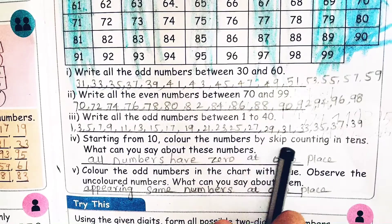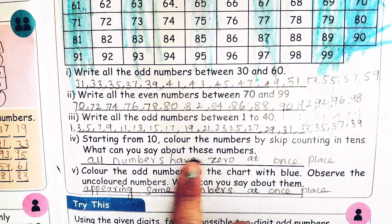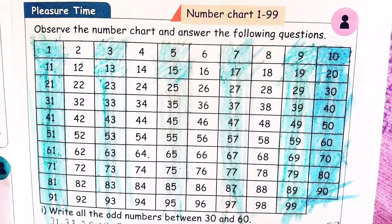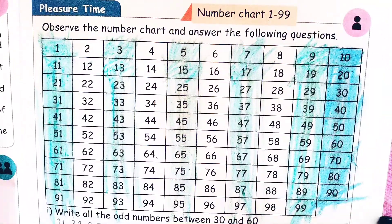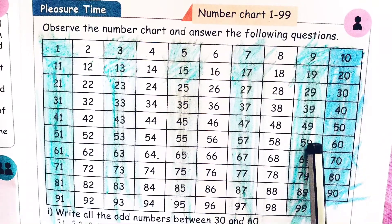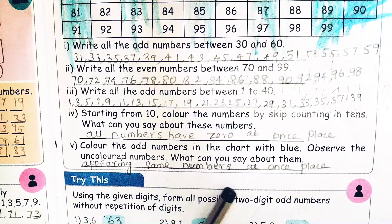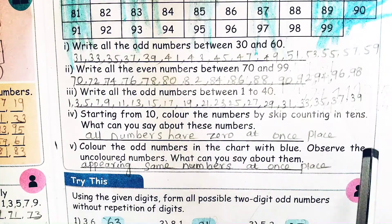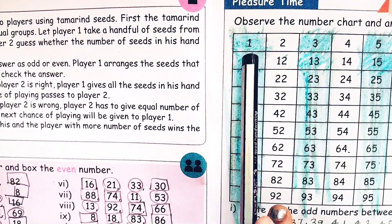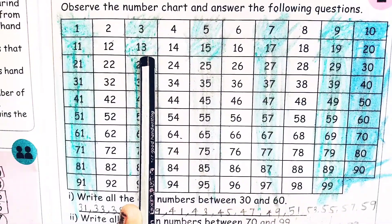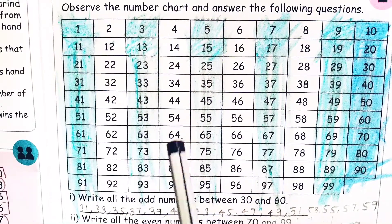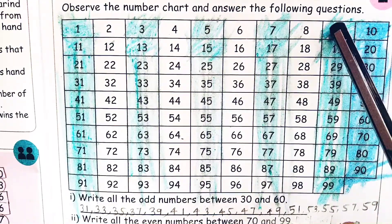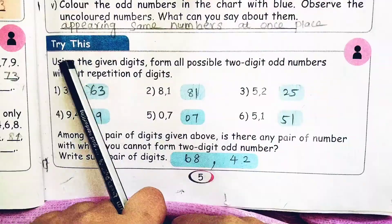Starting from 10, color the numbers by skip counting in 10. What can you say about these numbers? All numbers have 0 in the ones place. Color the odd numbers in the chart. If you observe the uncolored numbers, all have even digits in the ones place. Each row has 1, 3, 5, 7, or 9 in the ones place for odd numbers.